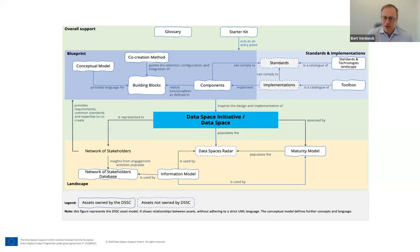That's where also artifacts like the maturity model come in, and the information model. How do we even make it known to people where these Data Spaces are? The Data Spaces radar is a way to do that.